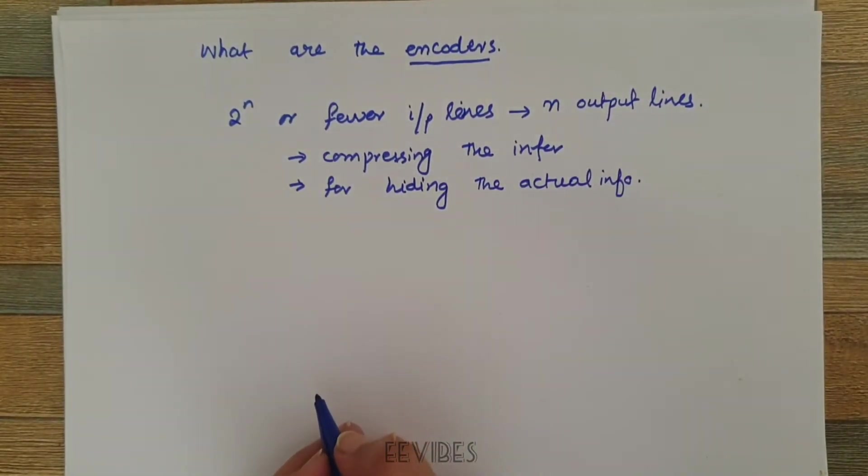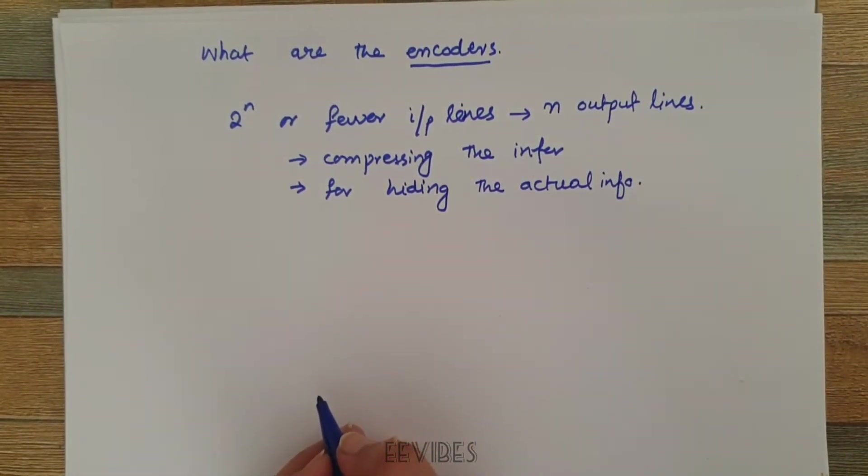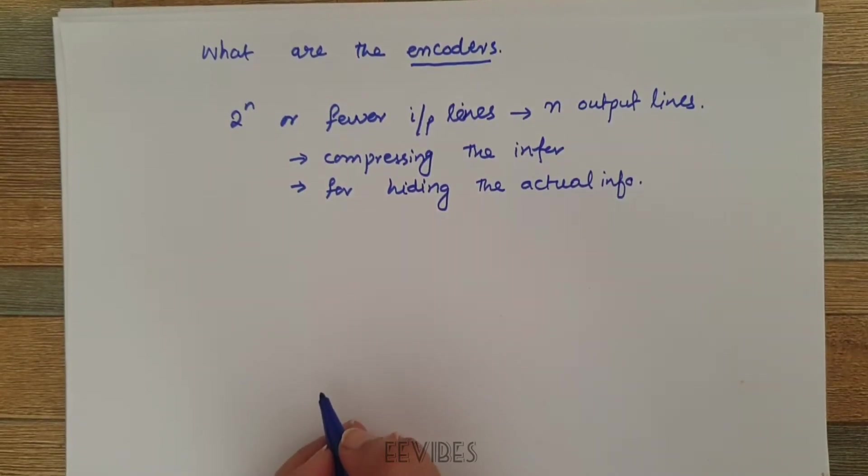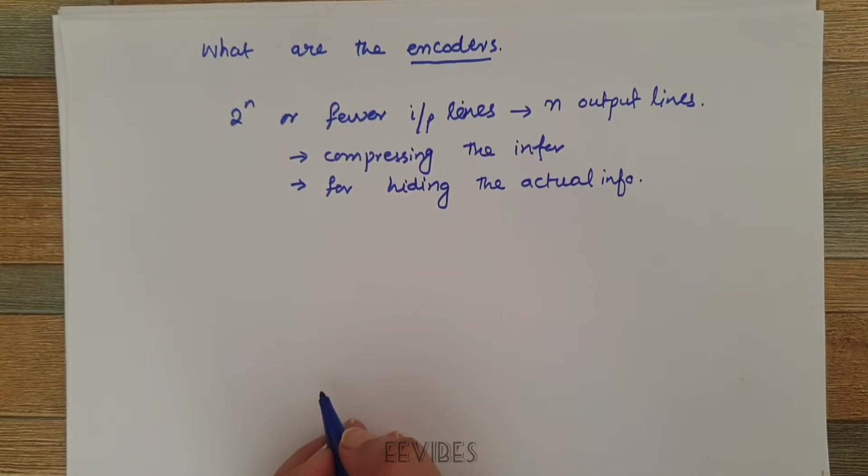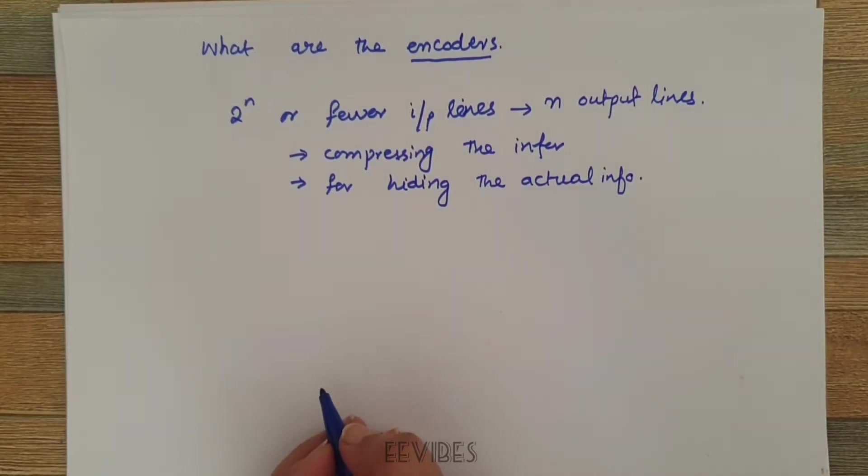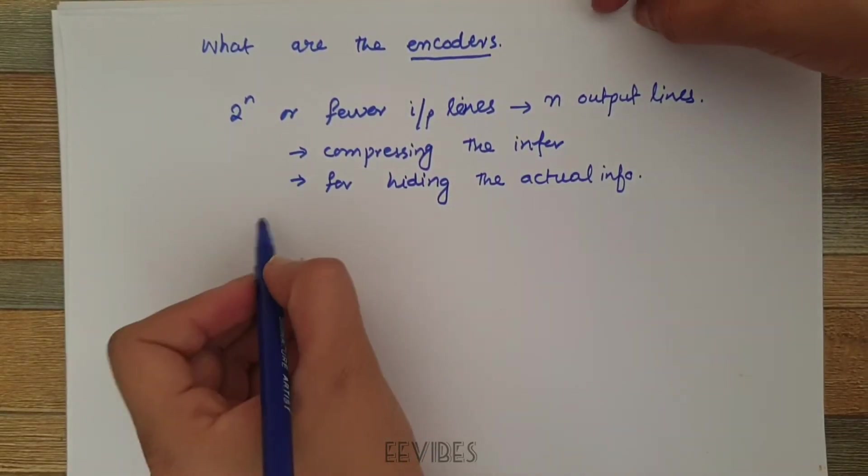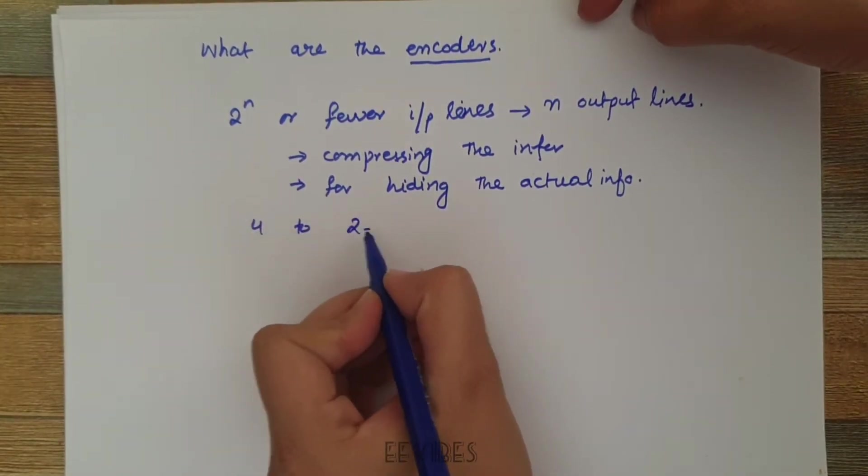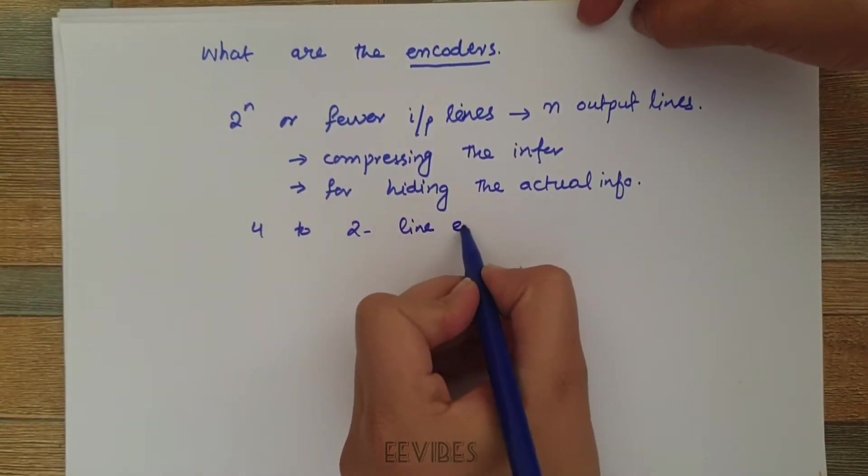It is assumed that in encoder circuits only one input has a value of one at any given time. So let's start designing a 4-to-2 line encoder circuit.